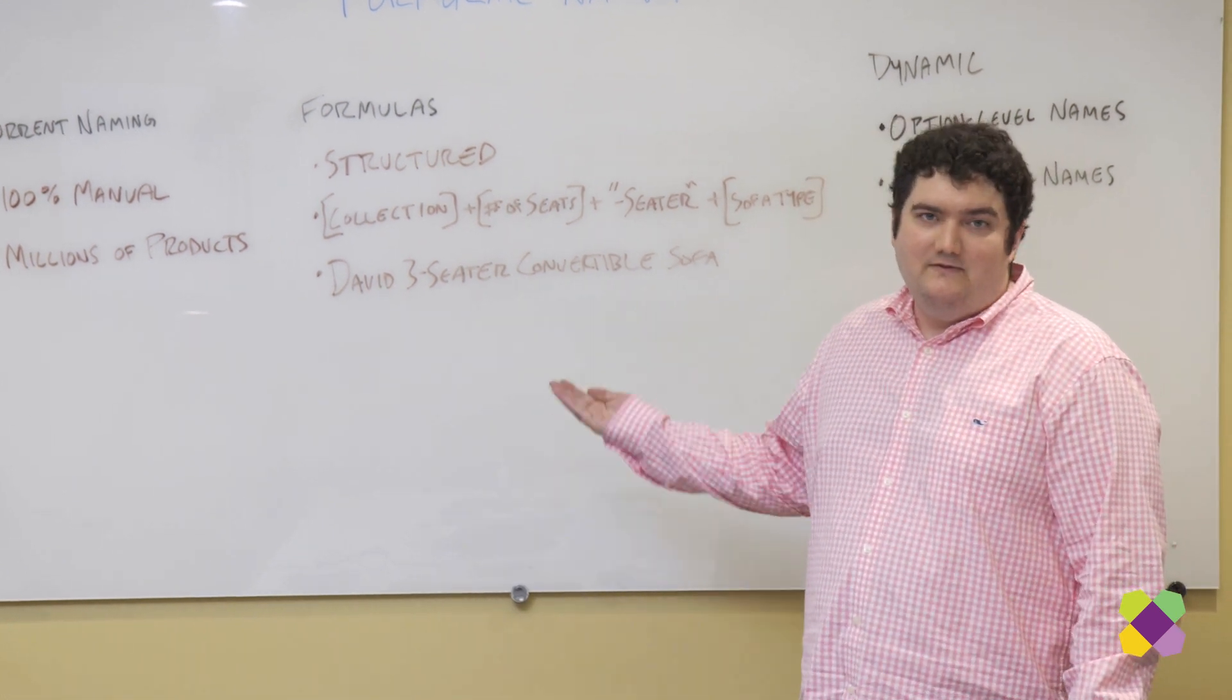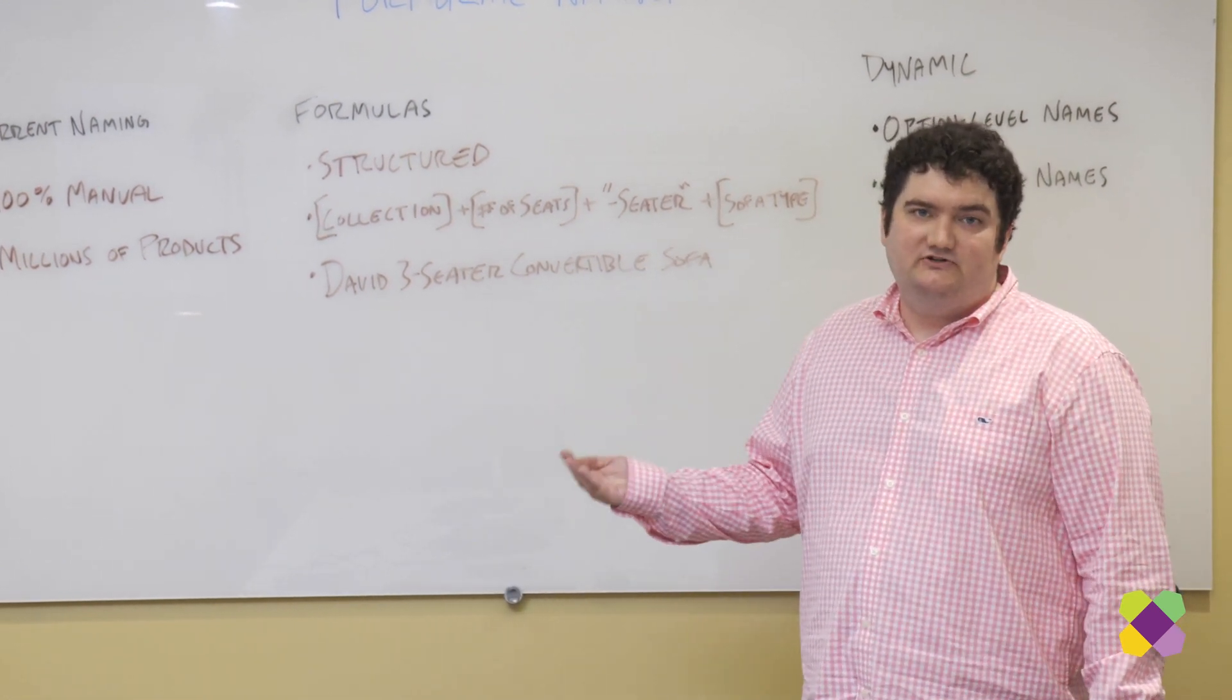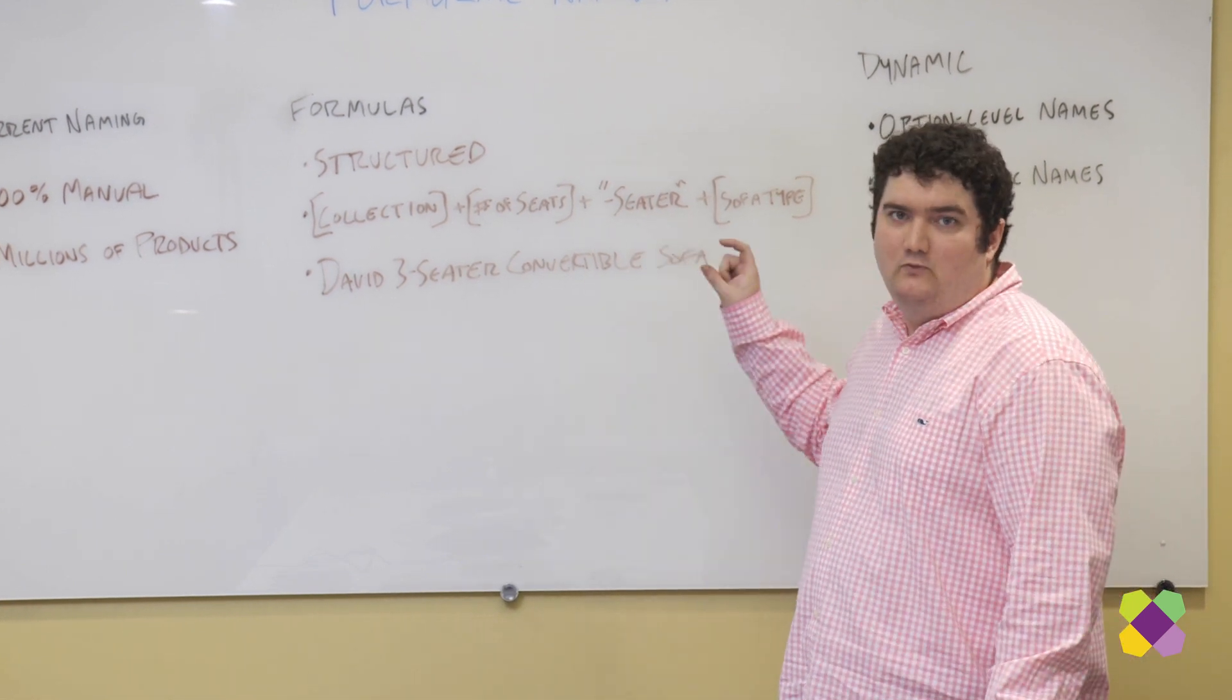So we're able to generate that name automatically once the merchandiser has gone in and said for sofas this is the formula that I want to use.